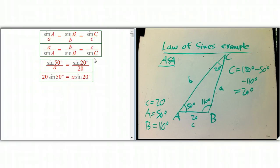20 sine 50 degrees equals a sine 20 degrees, and that's a very common step. You'll see, like, side times sine, side times sine, and they won't match now, because they've been switched. The a is not matching the 50, and the 20 is not matching the 20.